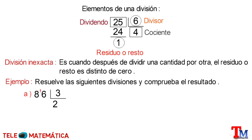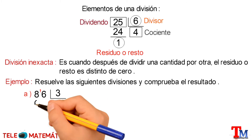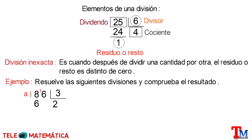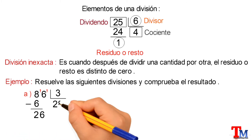Multiplicando 2 por 3 es igual a 6, que lo ubicaremos debajo del 8 y restamos ambos valores, obteniendo como resultado 2. Como este valor es menor que el divisor, seleccionaremos la siguiente cifra del dividendo, que sería el 6. Luego, un número que multiplicado por 3 se acerque al 26 sería el 8.